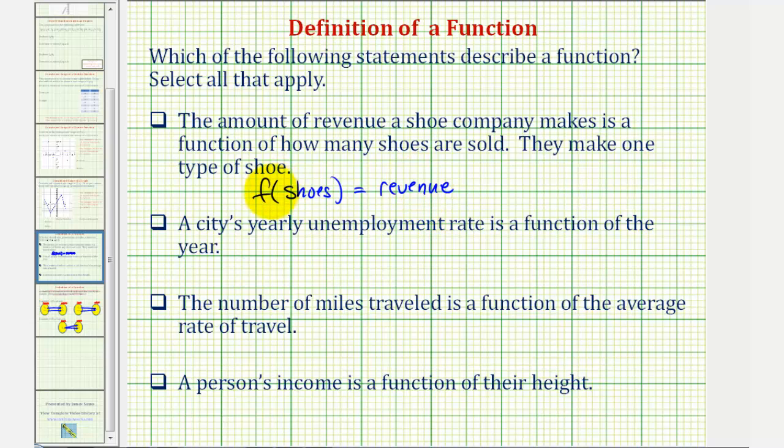This is true. For example, if the shoes cost fifty dollars each and they sell ten pairs, the revenue would be five hundred dollars. There's no other amount of revenue possible, so this situation does describe a function.